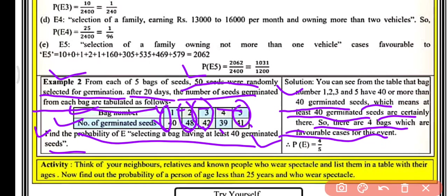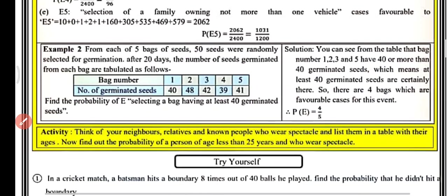There is an activity: observe your neighbors, relatives, and known people who wear spectacles and list them in a table with their ages. Then find out the probability of a person of age less than 25 years who wears spectacles.